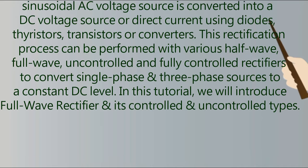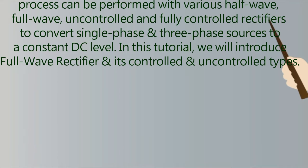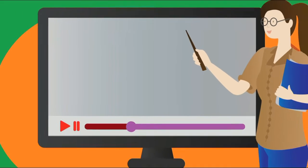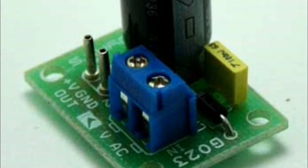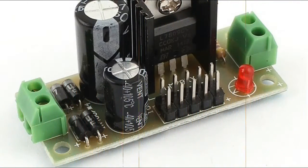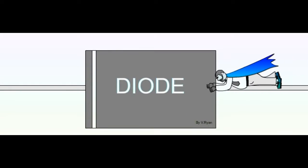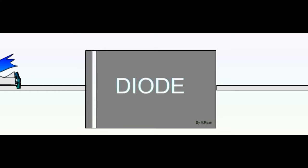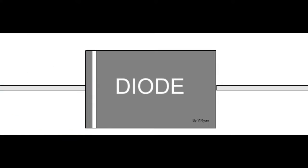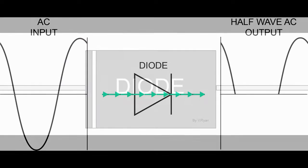In this tutorial we will introduce the full-wave rectifier and its controlled and uncontrolled types. Rectifiers are one of the main building blocks of AC power conversion with half-wave or full-wave rectification and generally use diodes for rectification. Diodes pass alternating current in the forward direction and block it in the reverse direction, and as a result they can produce a DC voltage.